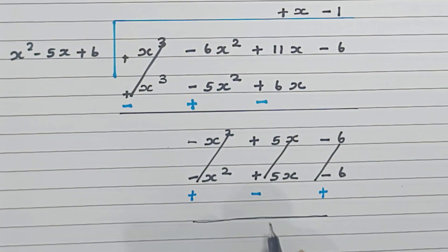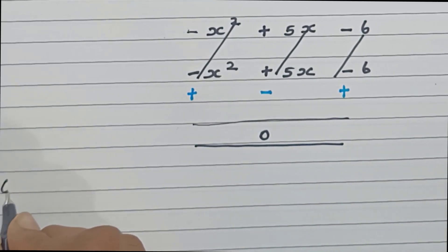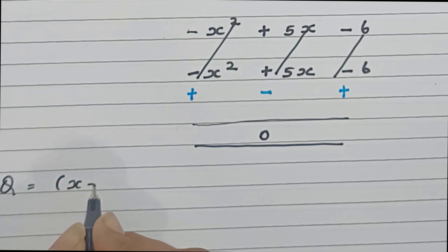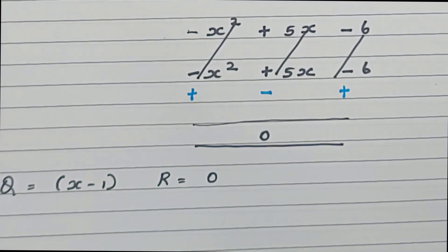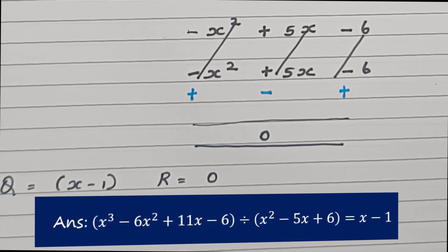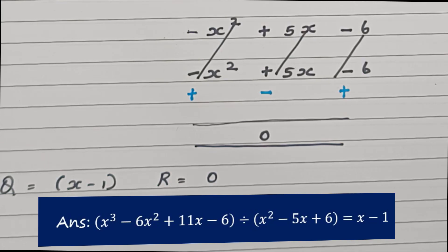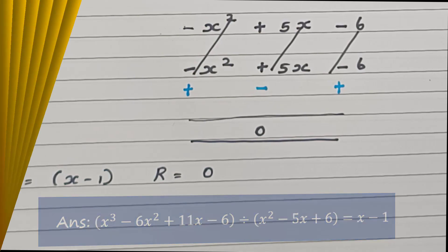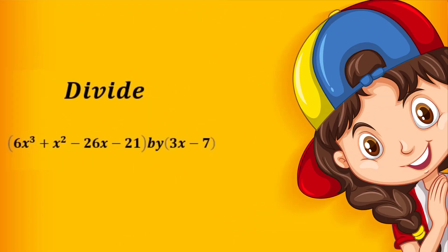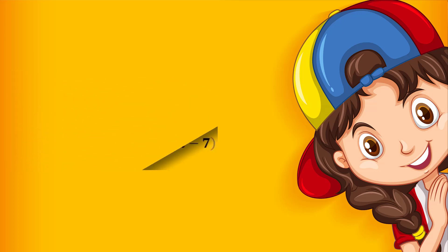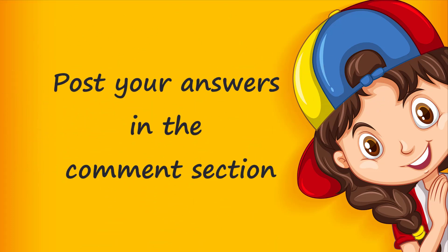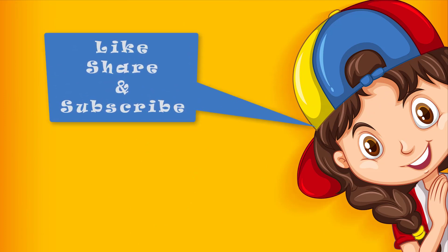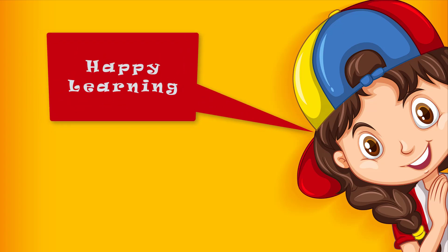Our remainder is 0. Therefore, x cubed minus 6x squared plus 11x minus 6 divided by x squared minus 5x plus 6 gives us x minus 1. I hope you understood how to divide a polynomial by a trinomial. Here's a small sum for practice: divide x cubed plus x squared plus 6x minus 26x minus 21 by 3x minus 7. Please do post your answers in the comment section. If you find my videos interesting, please like, share, and subscribe. Till then, happy learning, stay safe, take care, and bye bye!